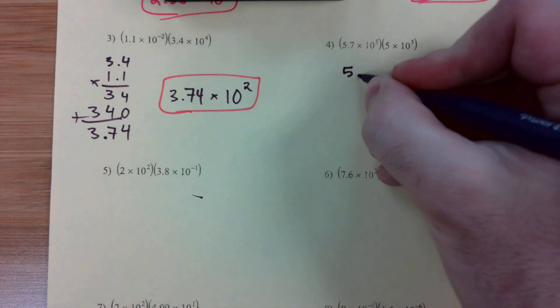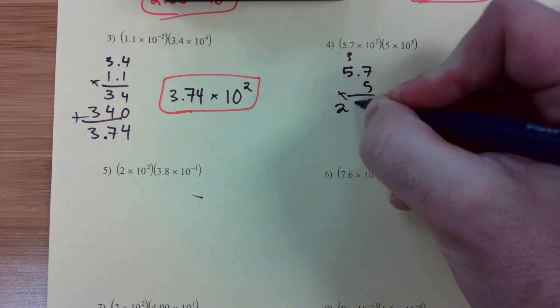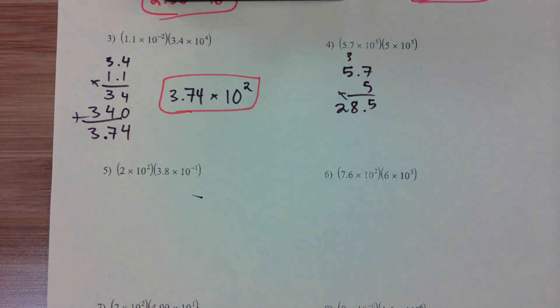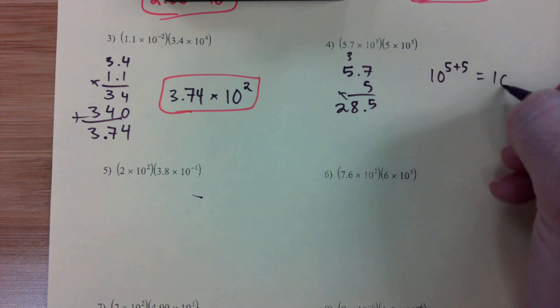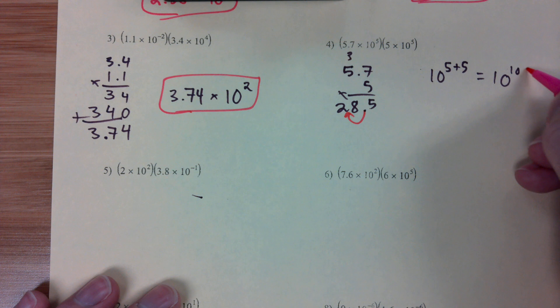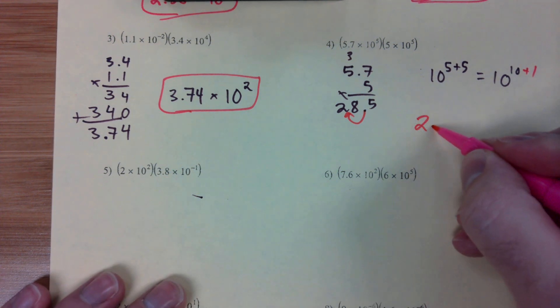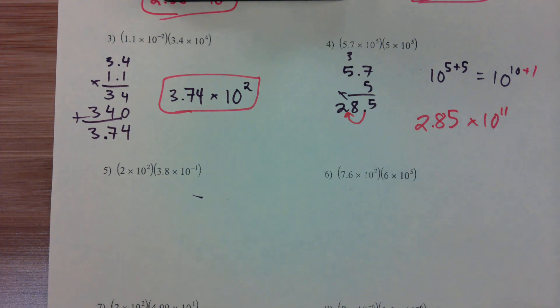Number four, 5.7 times 5, 35, 28.5. 10 to the 5 plus 5 gives us 10 to the 10. Move the decimal one space, add one to our exponent. 2.85 times 10 to the 11th.